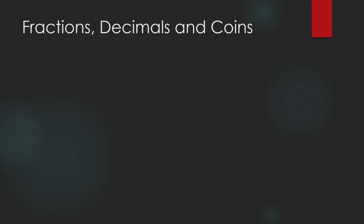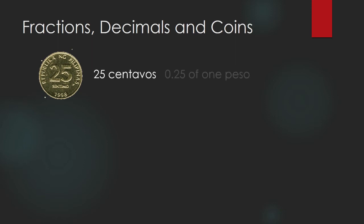Fractions, decimals, and coins. Centavos, when you see centavos, you are looking at a fraction. A fraction of one peso. That is what centavos means. I still see 25 centavos around. 25 centavos is 0.25 of one peso, or it's one-fourth. It's one-fourth of one peso. Centavos are fractions. They are fractions of one peso.